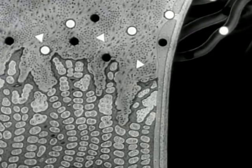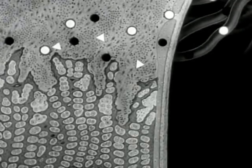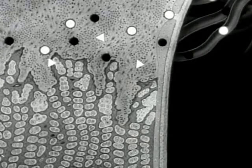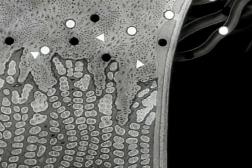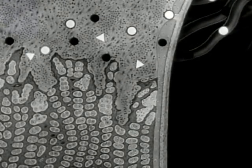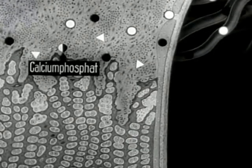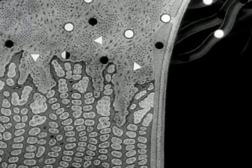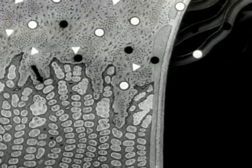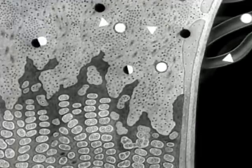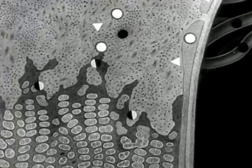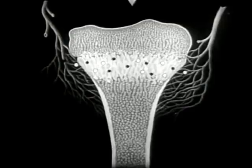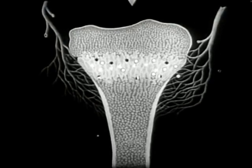Die Aufbausubstanz für den Knochen ist eine Verbindung von Kalk und Phosphor. Nur das Vitamin-D macht es dem Kalk möglich, sich mit Phosphor zu Calciumphosphat zu verbinden. Vitamin-D ist also für den Knochenaufbau unbedingt notwendig. Nur so wächst der Knochen gerade und fest.